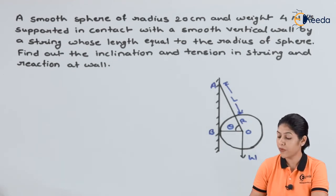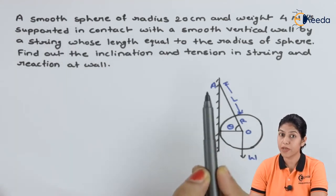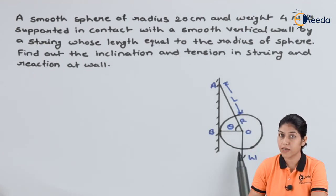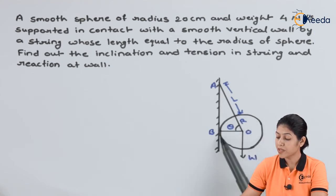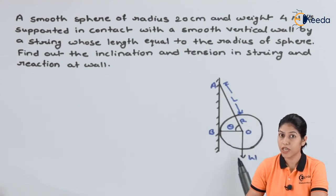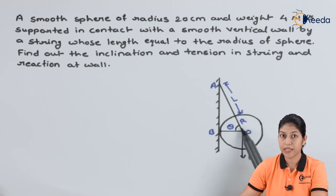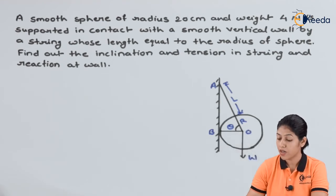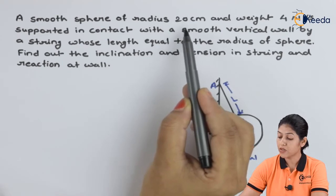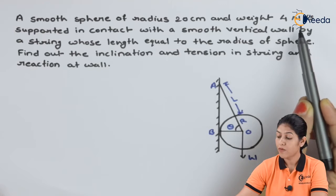Here we are considering a smooth sphere. Since it is given there is a smooth sphere or smooth surface, it will be frictionless, so we won't consider any friction force. This particular circle is representing the cross-sectional area of the sphere, and the radius of the sphere is represented by R. This O is representing the center of the sphere. The radius of the sphere is given as 20 centimeter and weight 4 Newton.